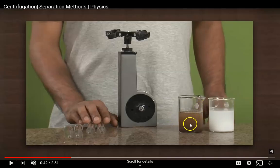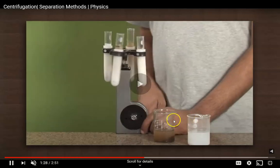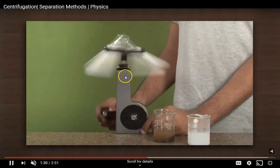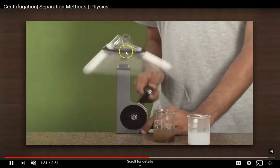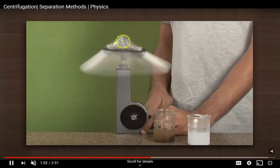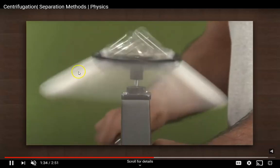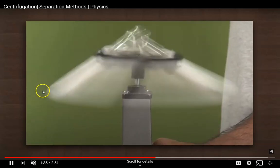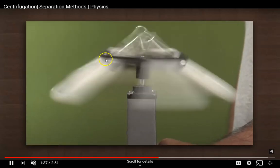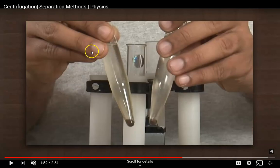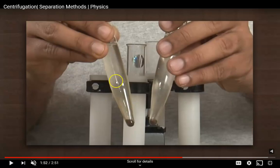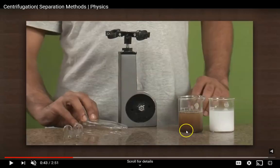Here we have some mud suspended in water. By placing them into a centrifuge that spins them around, all the heavier, more dense particles get spun out towards the edges, while the lighter ones remain at the top. And there it is — the mud settles to the very bottom, leaving the water much clearer than what it looked like before.